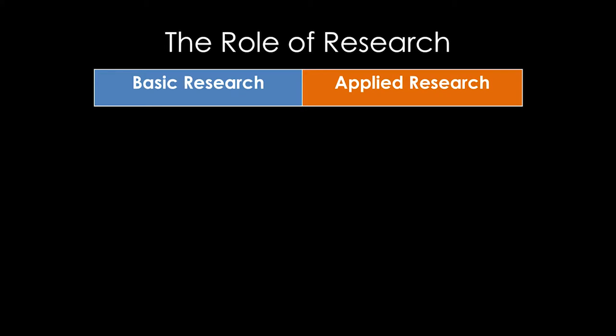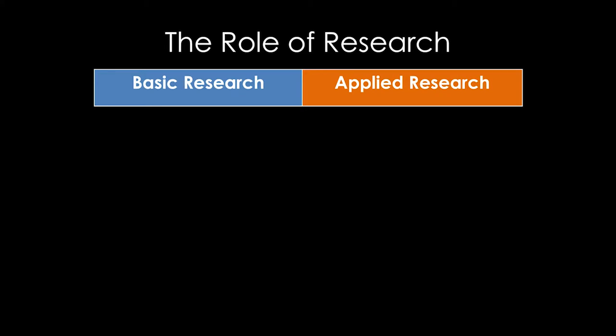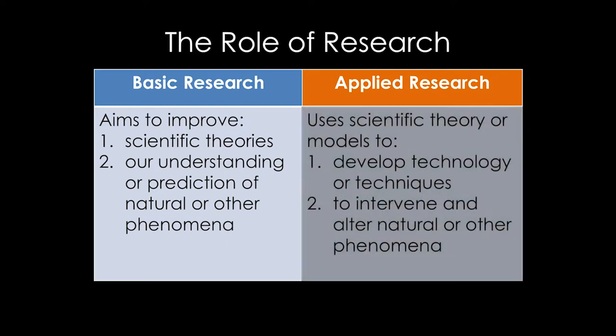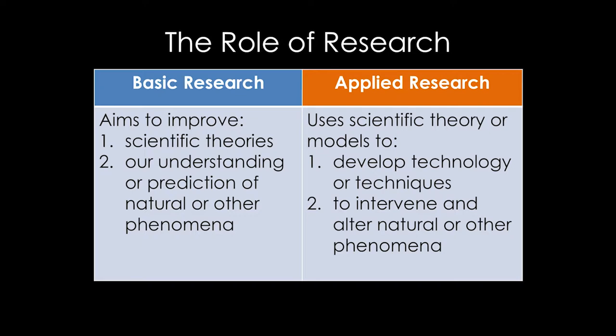Let's talk about the role of research in trying to enhance farmers' capabilities to adapt to climate change. When we talk about research, we're thinking about two principal categories: either basic research or applied research. Basic research is really aiming to improve scientific theories or our understanding of or prediction of natural or other phenomena. Whereas applied research is really designed to use scientific theory or models to develop technologies, techniques, and strategies to actually intervene and alter the natural or other phenomena that we see.